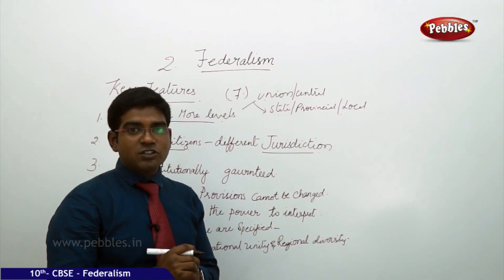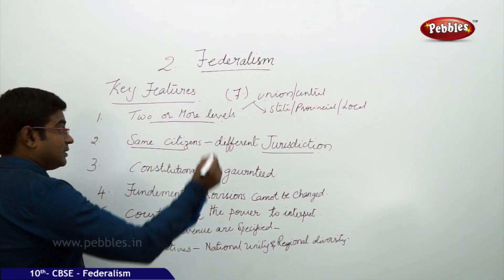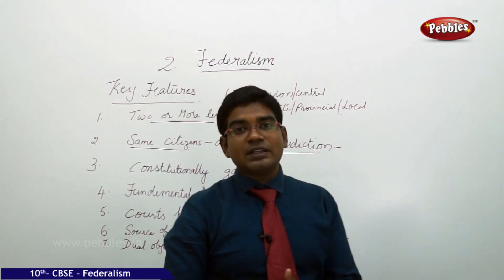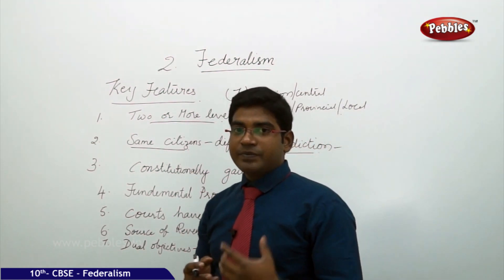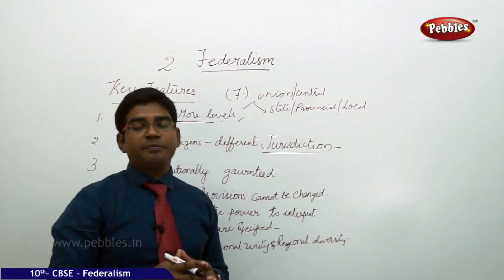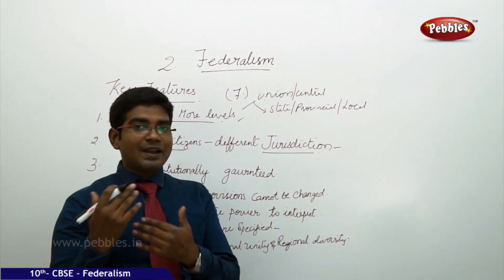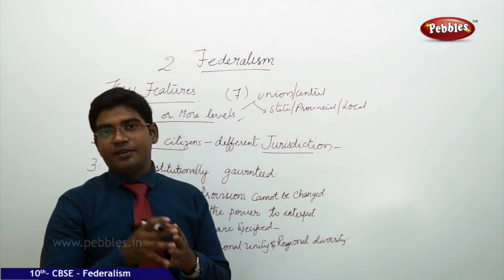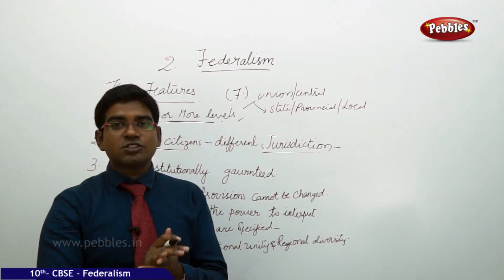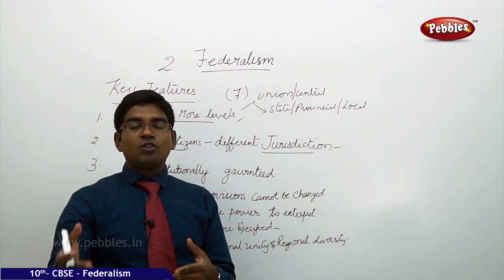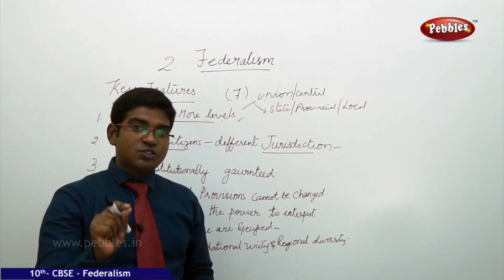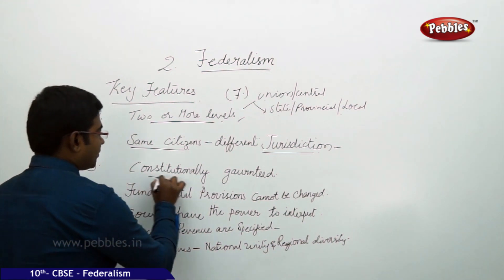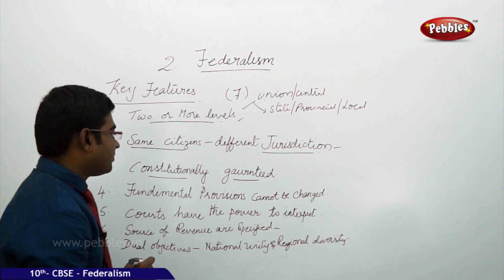Any matter concerned with national interest will be dealt by the union government; if concerned with state or local concerns, it will be addressed by the respective state. The third important feature is that this must be constitutionally guaranteed — it cannot be just a mutual concern of any two parties. For example, if party X rules at the union level and party Y rules at the state level, without constitutional validity their mutual agreement would have no legal standing, and the union government could try to crush or derail the state governments.